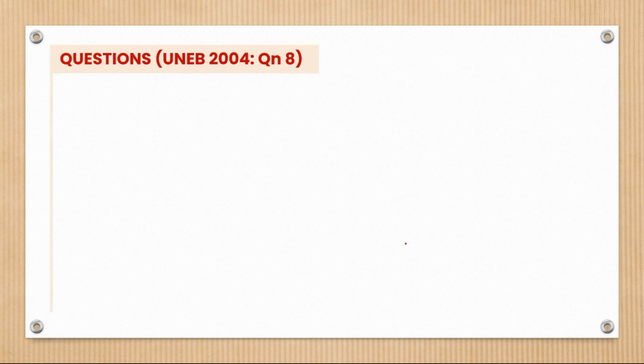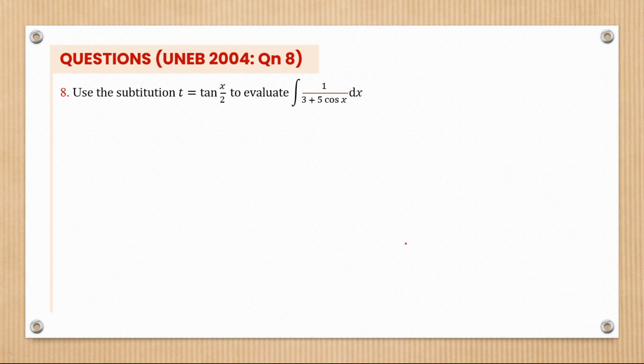Let's look at question number eight from INEPT 2004. This is an example where partial fractions is just one of the steps. We need half-angle substitution, and later we'll encounter some linear factors which will need to be converted into partial fractions. We're told to use the substitution t = tan(x/2) to evaluate the integral of 1/(3 + 5cos x) dx.